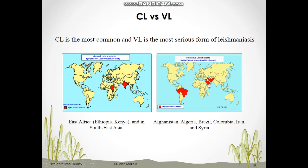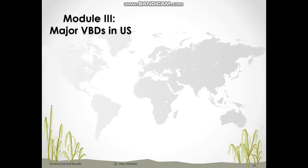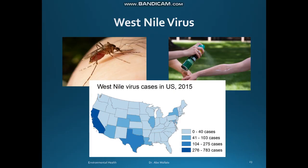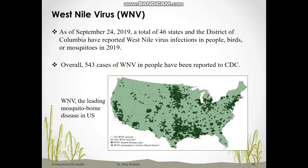Now let's move on to talk about the leading vector-borne diseases in the United States. The first is West Nile virus, the leading mosquito-borne disease in this country. According to the CDC as of September 2019, 46 states reported West Nile virus cases in humans, birds, and mosquitoes. Overall, 543 cases of West Nile virus in people were reported to the CDC.